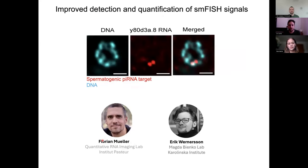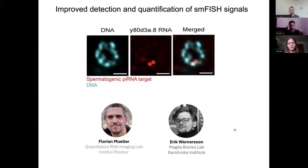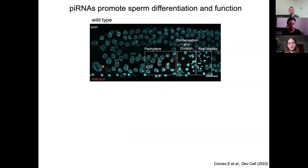To assess the physiological consequences of piRNA pathway dysfunction, we used single-molecule FISH to track the transcription of specific spermatogenic targets of the piRNA pathway. I was very lucky to collaborate with Florian Muller and Eric Wernerson to improve together the detection and quantification of single-molecule RNA signals from whole worm tissues. Here you can see, for example, the signal from two transcriptional foci from a single germ cell nucleus.